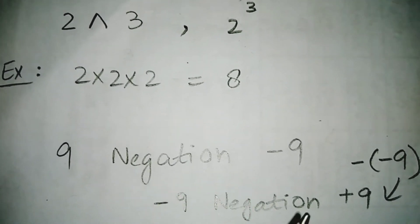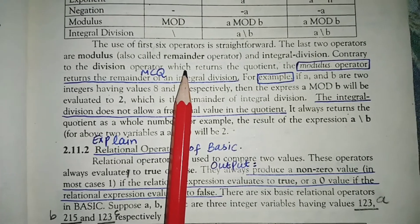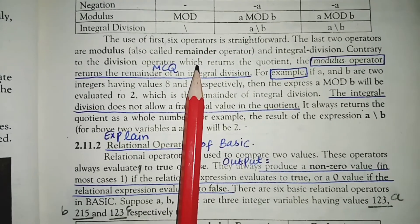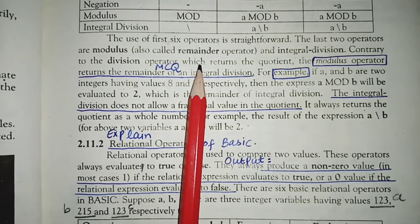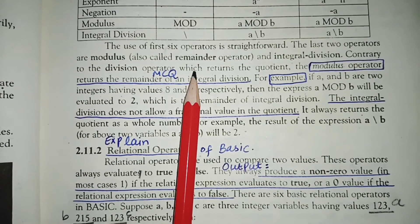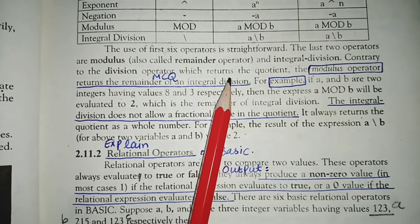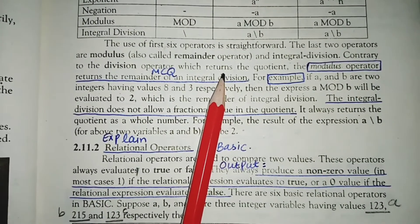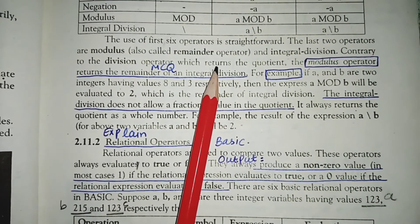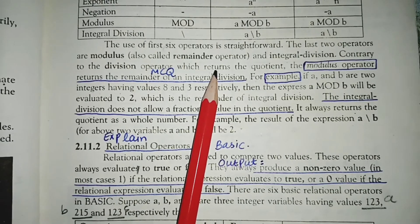The last two operators are modulus operator and integral division operator. These two operators are slightly different. In a regular division operation, we get a quotient after dividing. This quotient can be a whole number, or it can have both an integral and a fractional part.